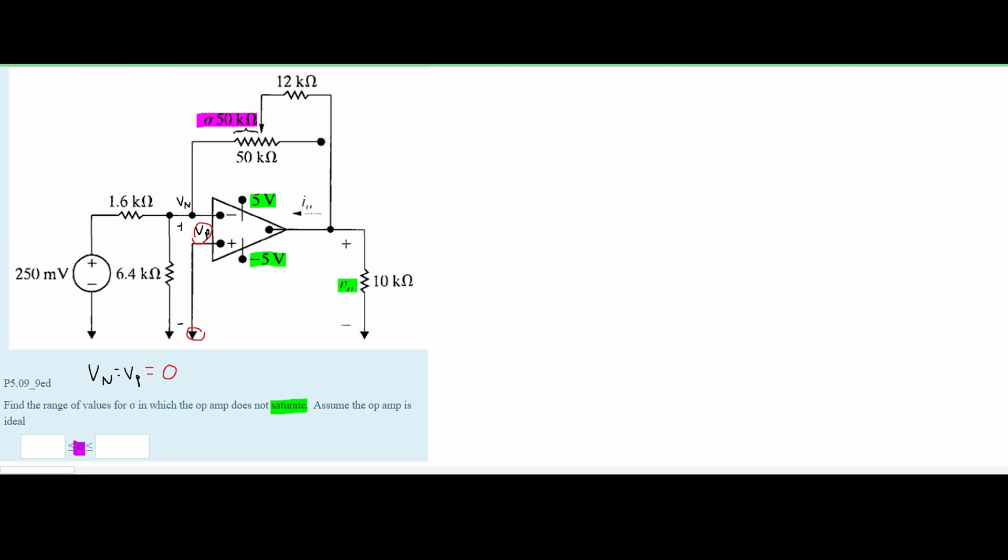So we're going to use the node voltage method. When we're doing this, we can really consider this to be one node, because Vn is the same across both of them, but we're just going to deal with this closest node. So this is our Vn node.